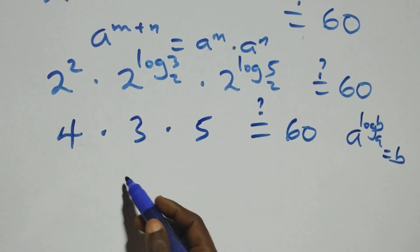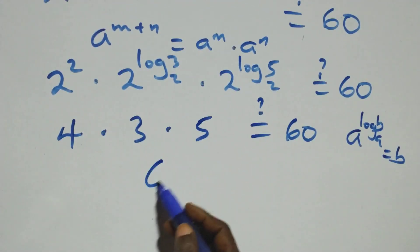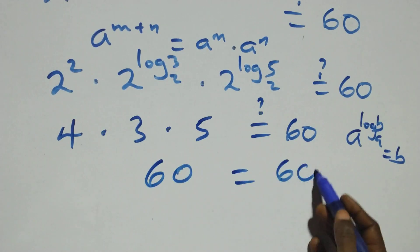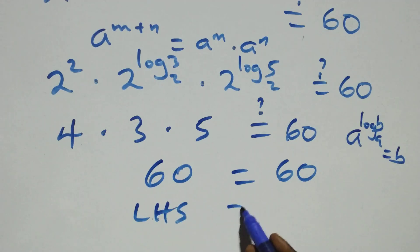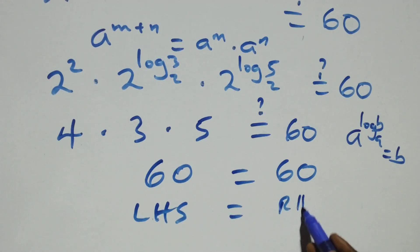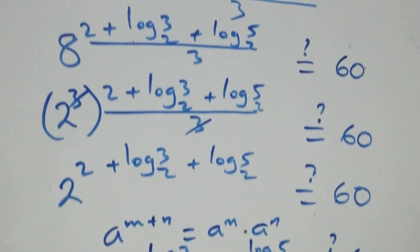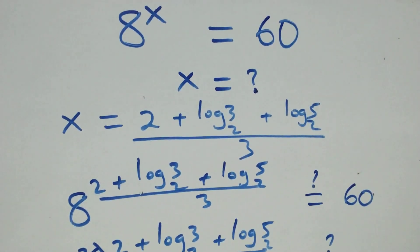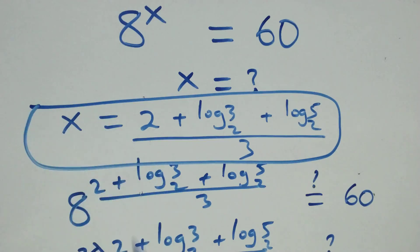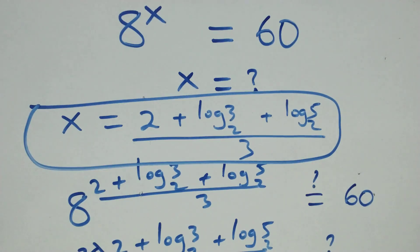Four times three is twelve, times five is sixty, and this equals sixty on this side. We have left-hand side equals right-hand side. Therefore, we conclude that x equals to two plus log three base two plus log five base two, all over three, satisfies this given problem. Thank you for watching — don't forget to subscribe for more videos, turn the notification bell on, share this video, and put your comments. See you next class, bye for now.